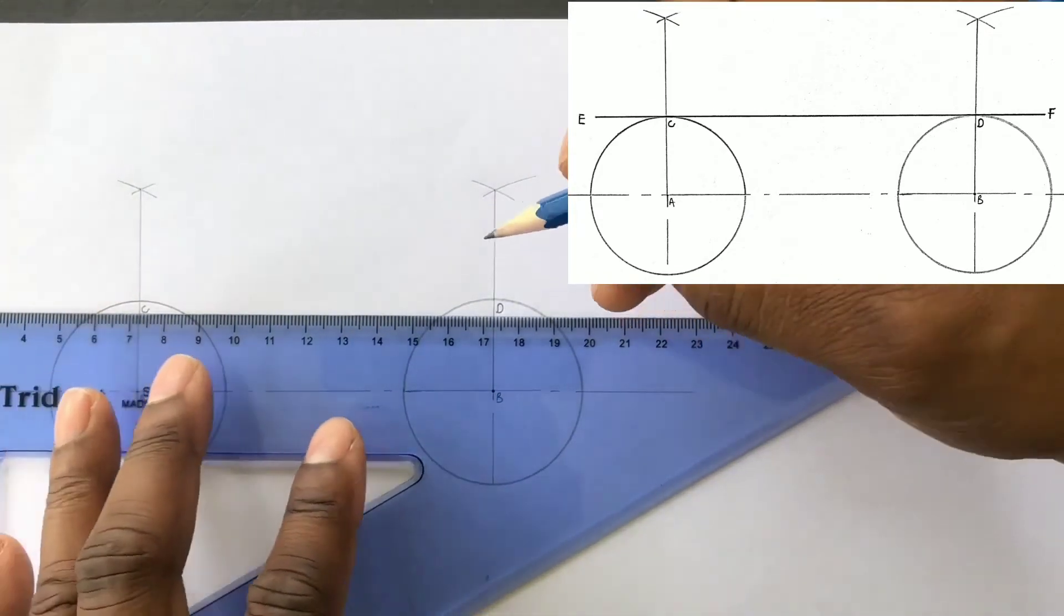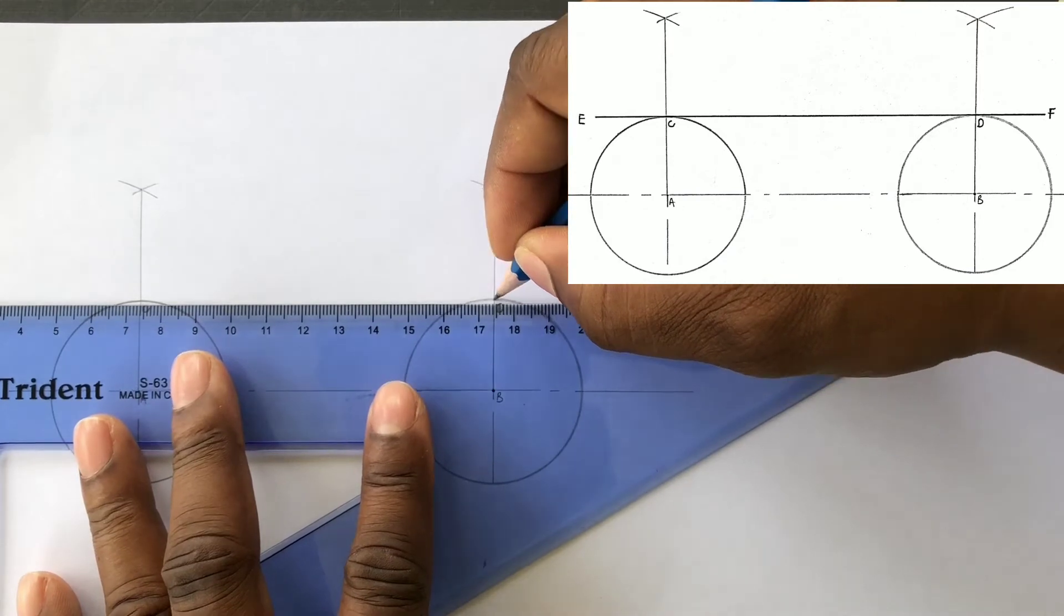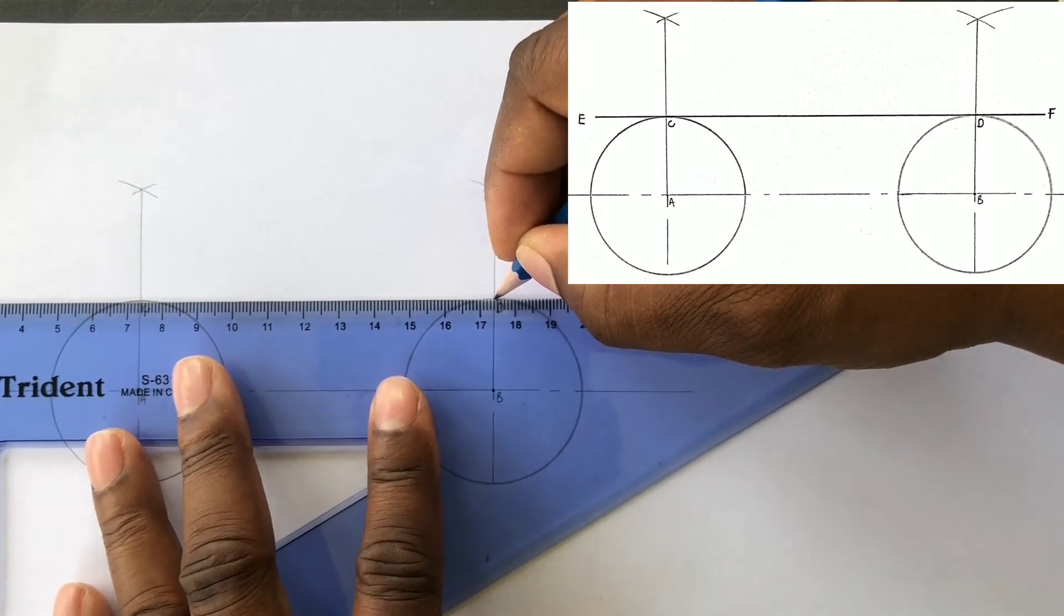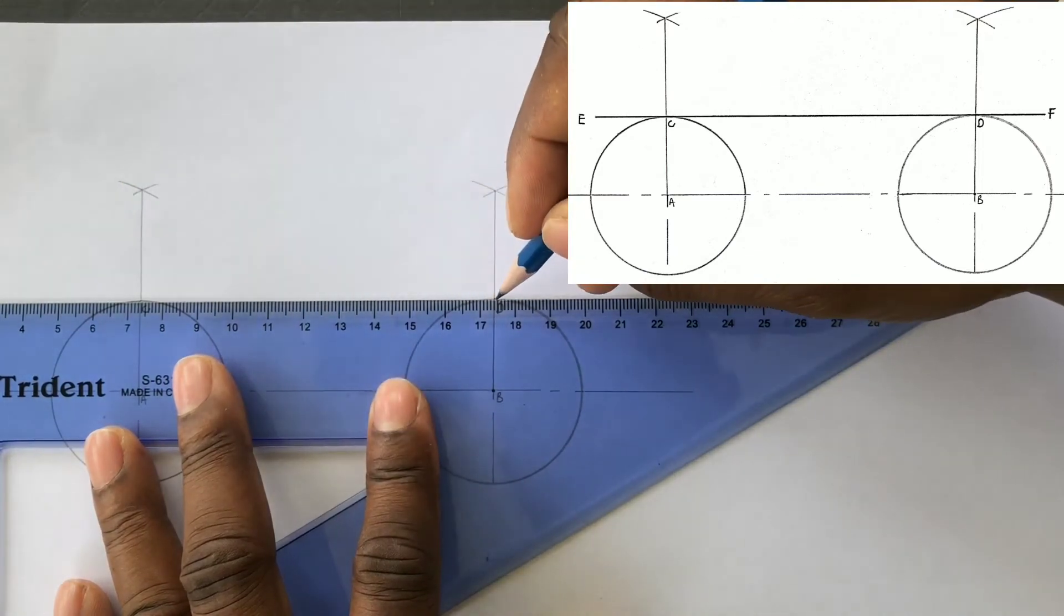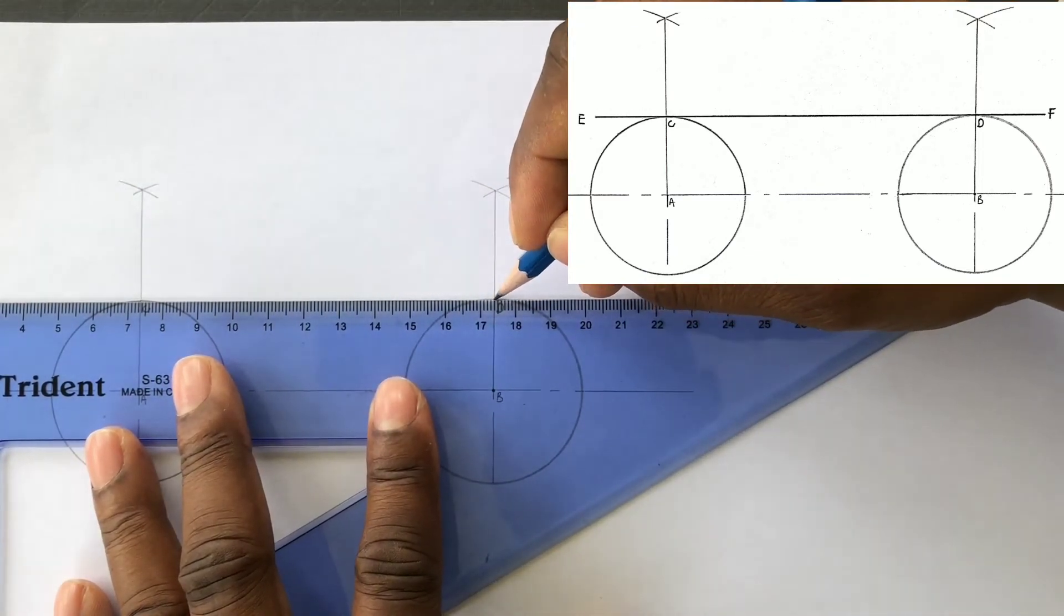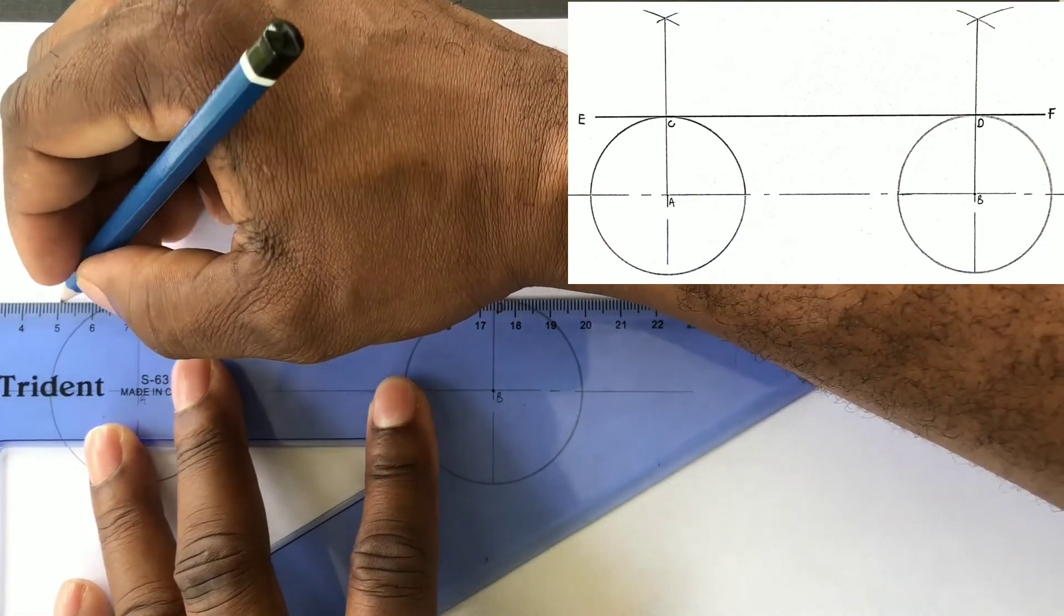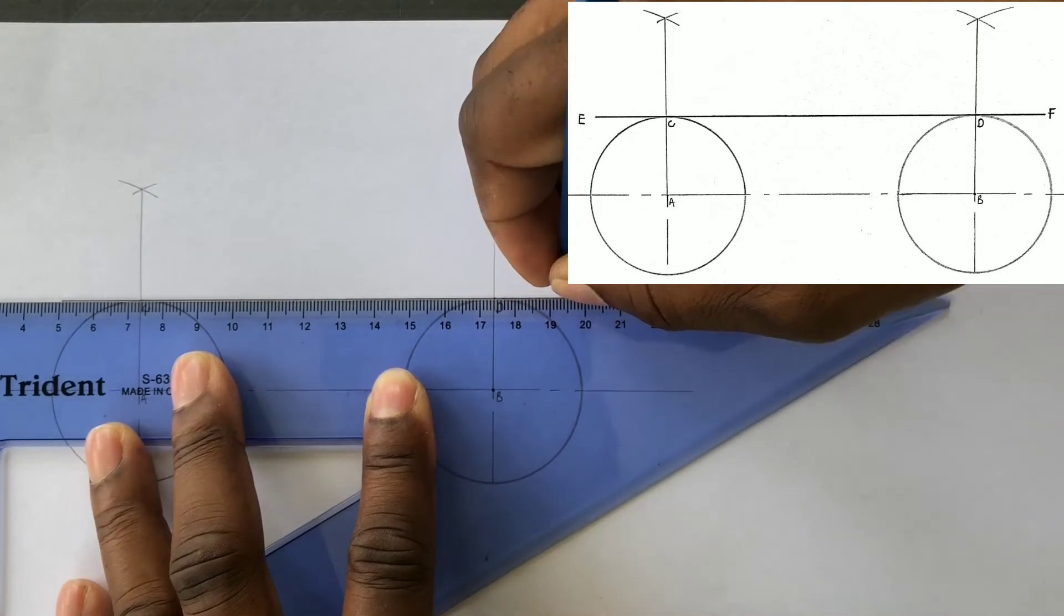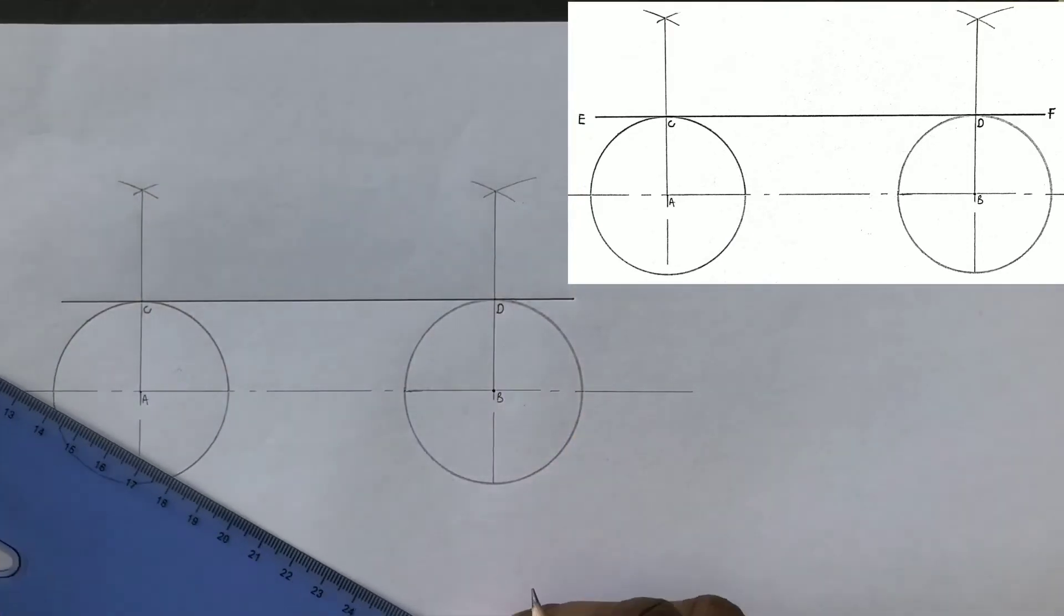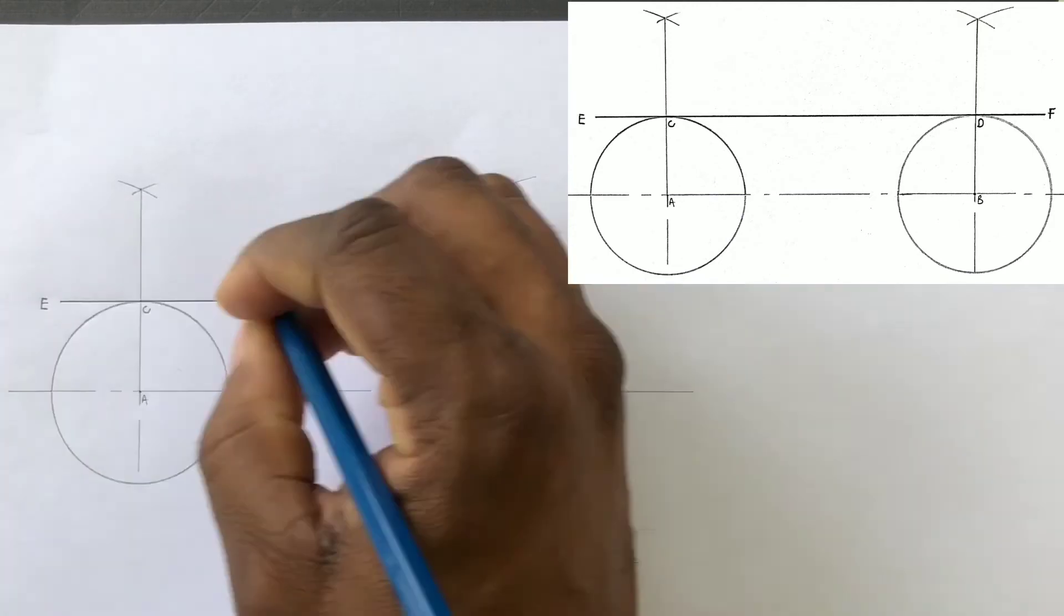We will now draw our required tangent to sit on point C and point D. The required tangent will be labeled E, F.